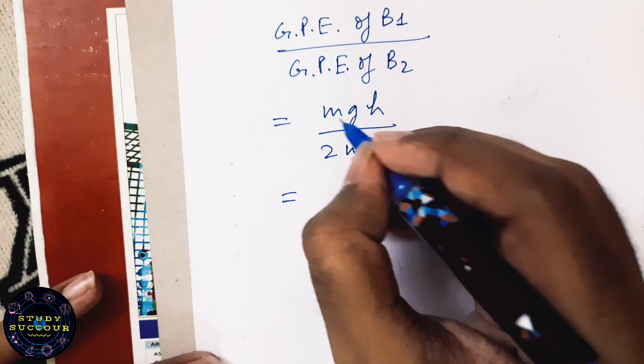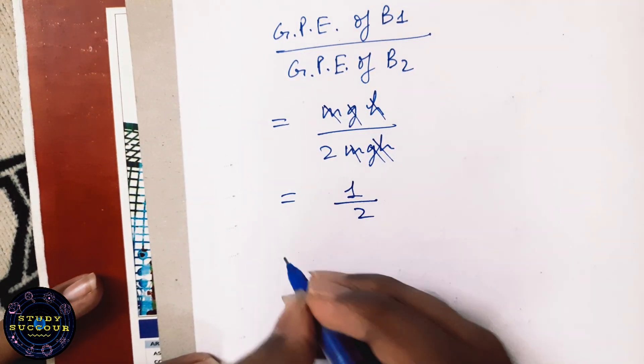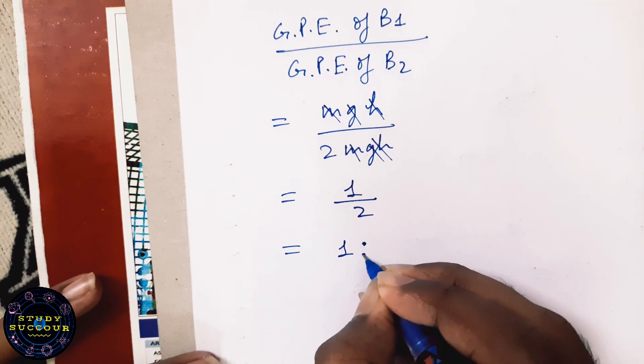Now, just simplify this. Cut the M, cut the G and cut the H. We will get 1 by 2 or 1 is to 2.